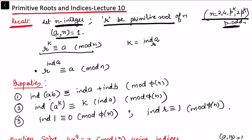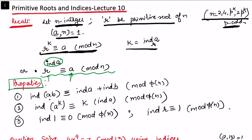We choose an integer a whose gcd with n is 1. We are interested in the exponent of r, and we call this k the index of a with respect to the primitive root r. So r to the power index of a is congruent to a. The index is the exponent that holds this congruence true. These properties are similar to the discrete logarithm: index of a·b equals index of a plus index of b; index of a to the power k equals k times index of a; index of 1 is 0; and index of r is 1.